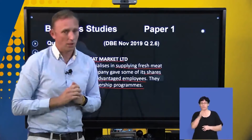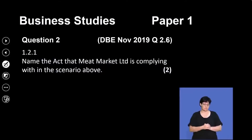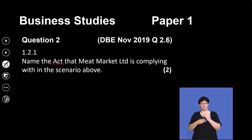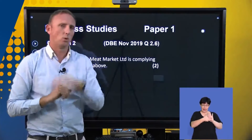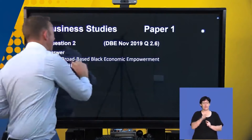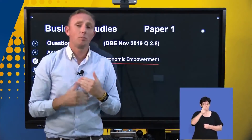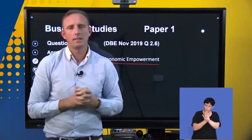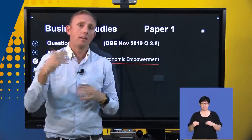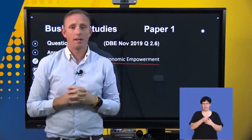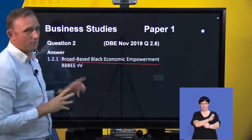The first question is: name the act that Meat Market Limited is complying with in the scenario above. The minute you see the word 'act', you know it's a law. The answer is Broad-Based Black Economic Empowerment — do not confuse it with BEE. Broad-Based Black Economic Empowerment is a law that the government brought out which regulates how businesses can take part in broad-based black economic empowerment. That's the first part of the question.